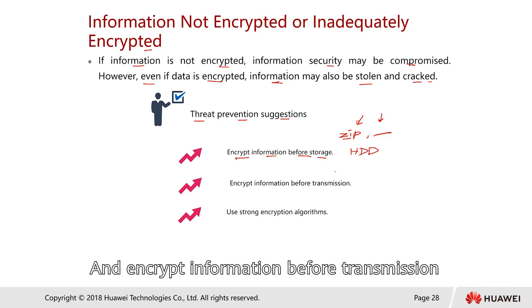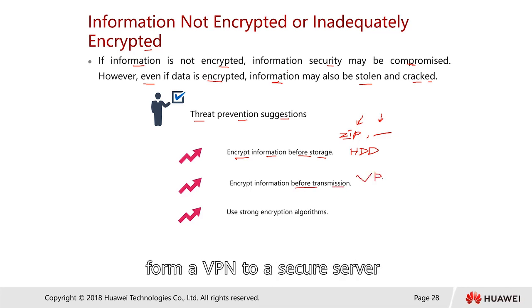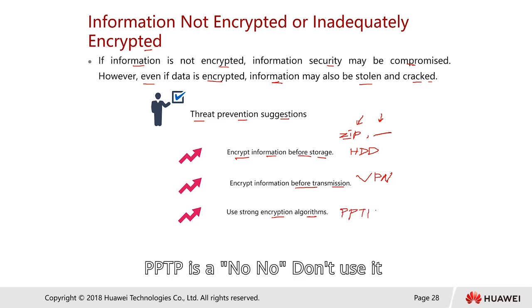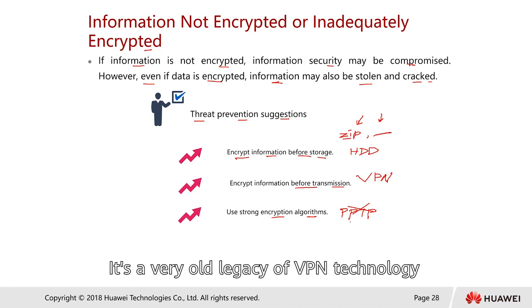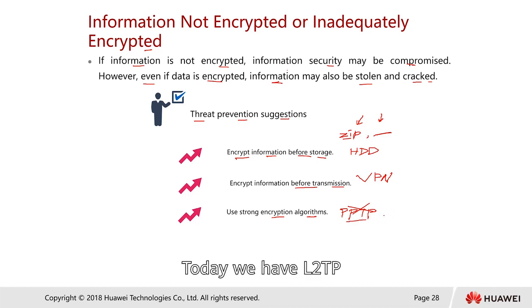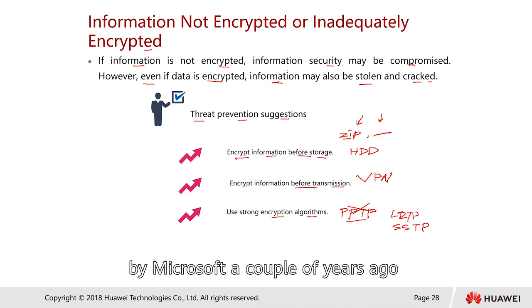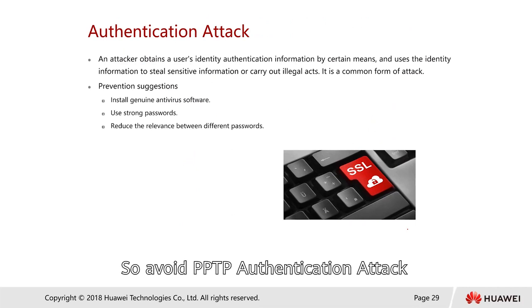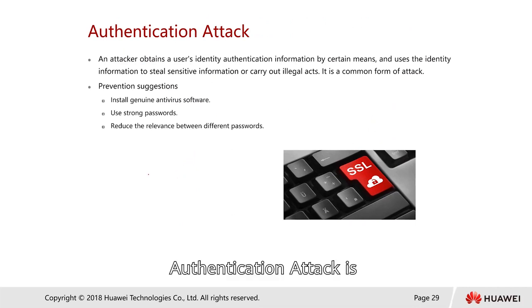Encrypt information before transmission. The easiest way is to form a VPN to a trusted server, such as your office server, using a strong encryption algorithm. PPTP is a no-go — it's very old legacy VPN technology. Instead, use L2TP, L2TP/IPSec, or Microsoft's SSTP, all of which are much more secure than PPTP.